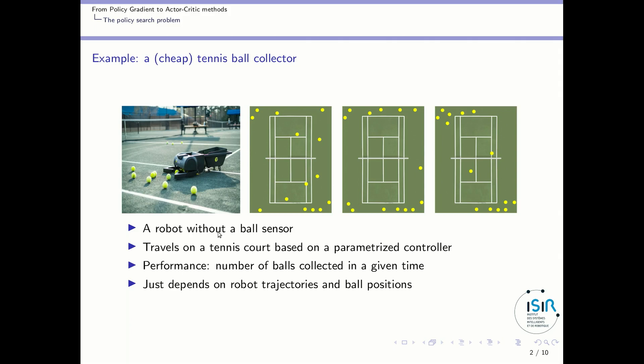So the only option is to wander more or less randomly on a tennis court so as to collect the balls. So we will consider the case where the robot comes with a parameterized controller and we will play with the parameters, and our performance will be the number of balls collected in a given time. We could use different performance but this one is easy to understand. And of course this performance just depends on the robot trajectories and on the ball positions.